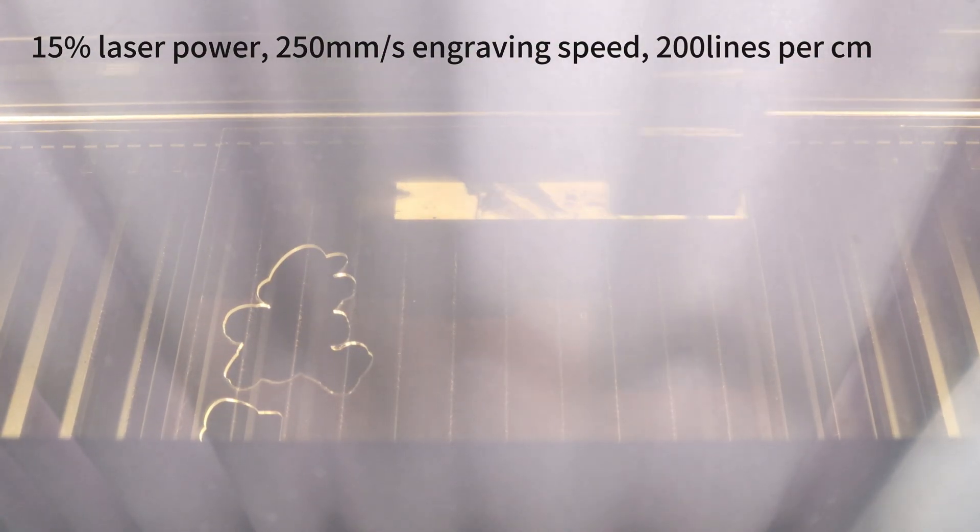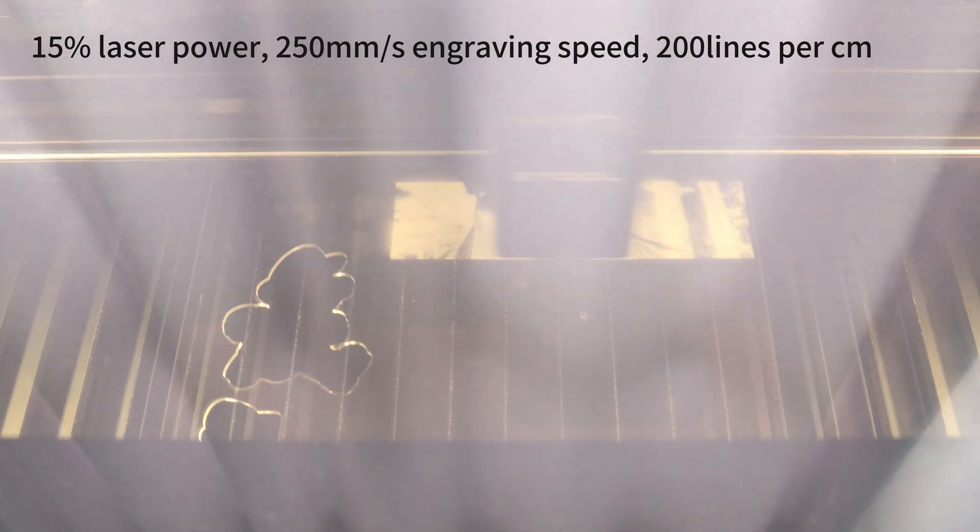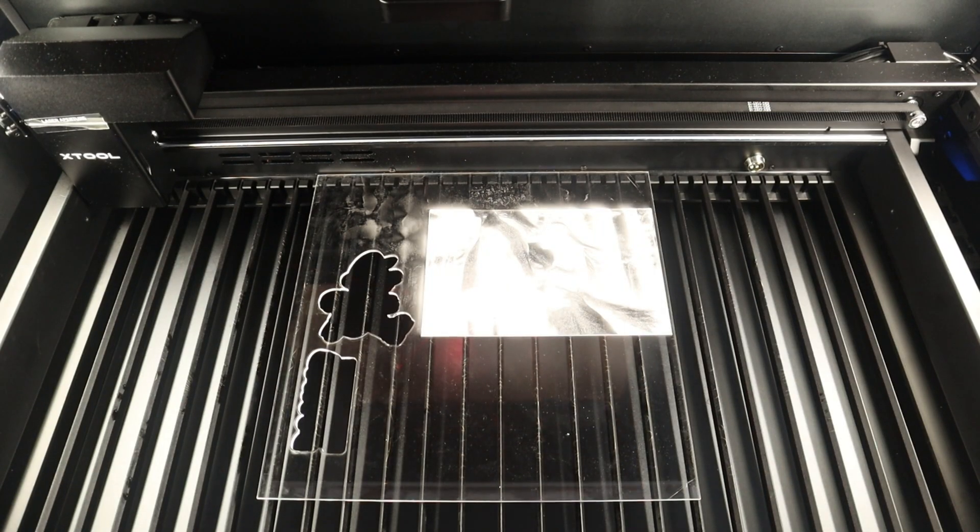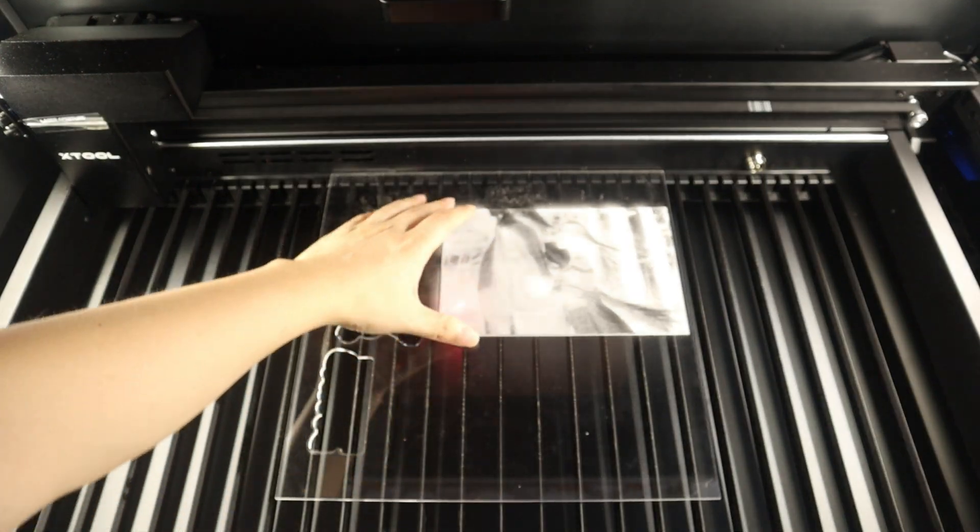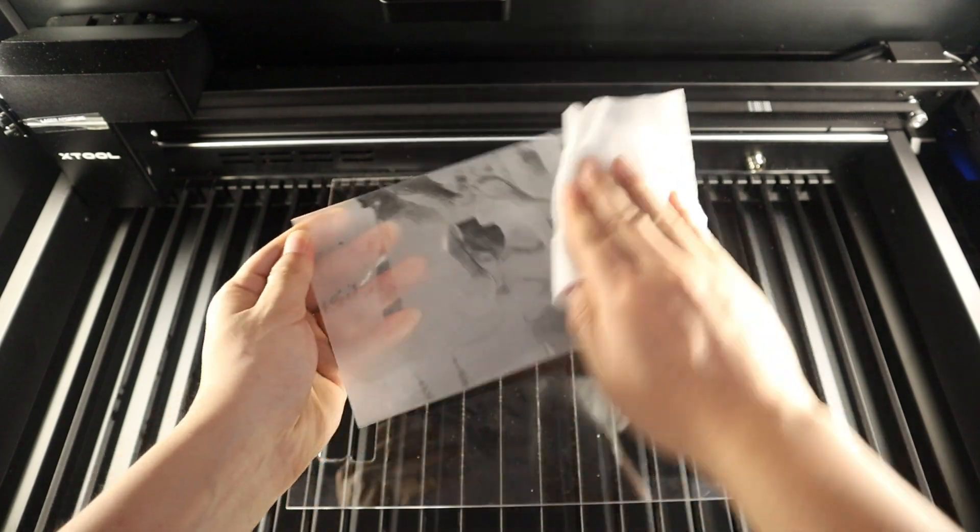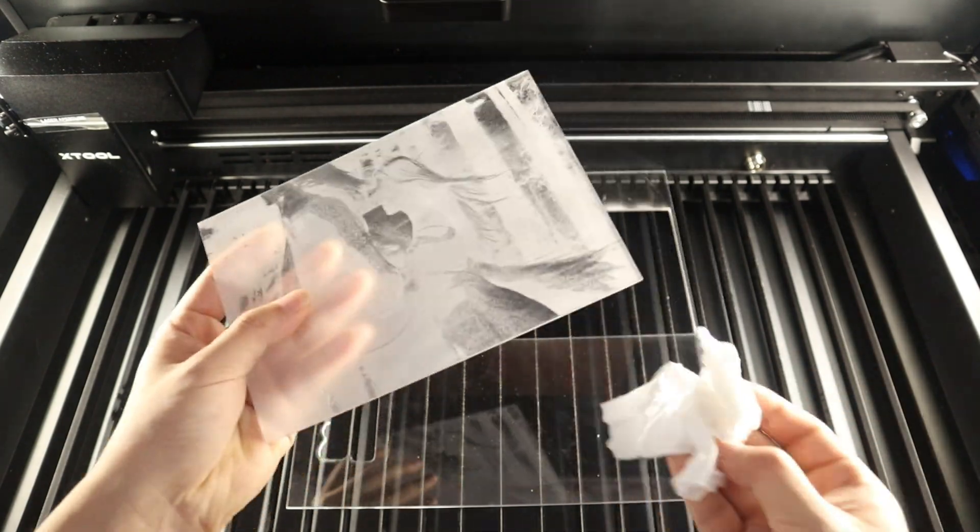Next, I tried to engrave a photo on clear acrylic lid to see what kind of effect it would have. The parameters for photo engraving are 50% laser power, 250 mm per second engraving speed, and 200 lines per centimeter line density. It took about 41 minutes to complete the engraving. The transparent acrylic engraving of photos is very creative. But to see the details of the photo clearly, you should present it from a light source. As you can see, the details of the photo are still clearly visible.